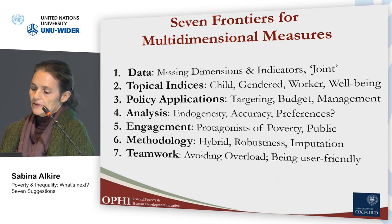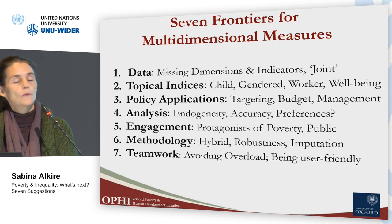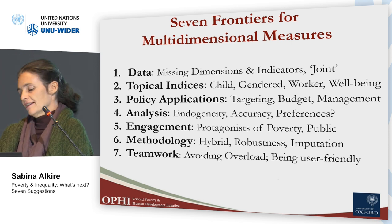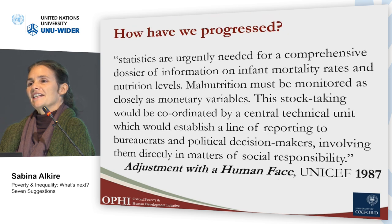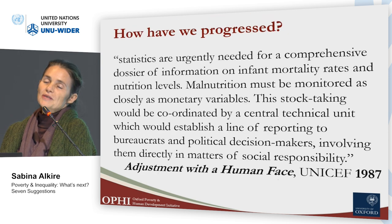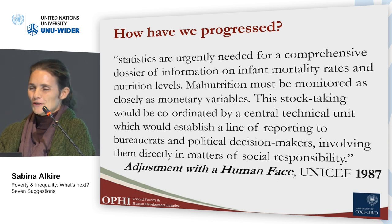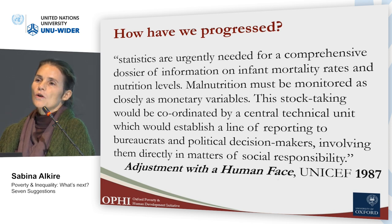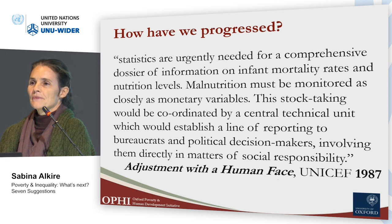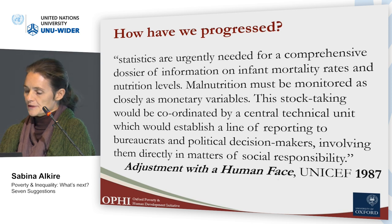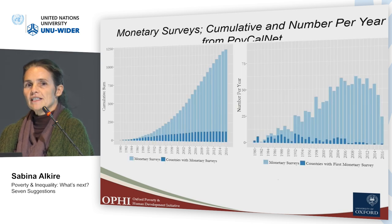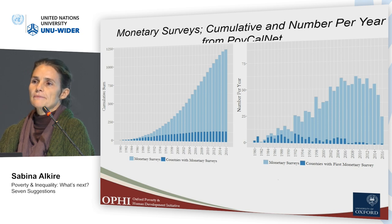I begin with a concern for data. I have a couple of cheat slides here. When 'Adjustment with a Human Face' was published — and Andrea and Francis Stewart are here — there was a call at that time for much better statistics for malnutrition and child mortality, much more regular and easy to interface with policymakers. The first recognition is that there has been a radical shift in data availability since that time.